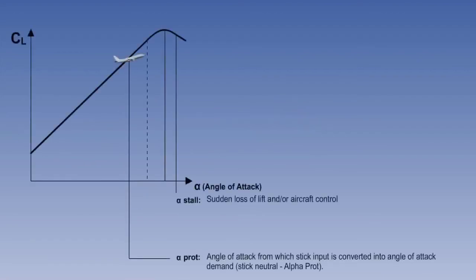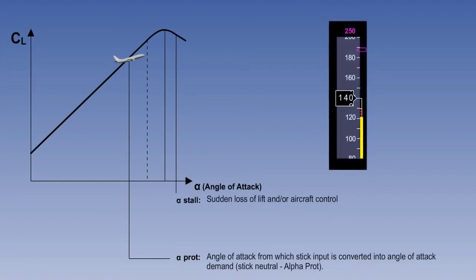But with a fly-by-wire system, the pilot can pull back fully on the controls and the flight control computer will ensure that the airplane achieves the best angle of attack without stalling. It achieves this by allowing the angle of attack to increase until the airplane reaches alpha prot, where the pilot demand is converted into an angle of attack demand.